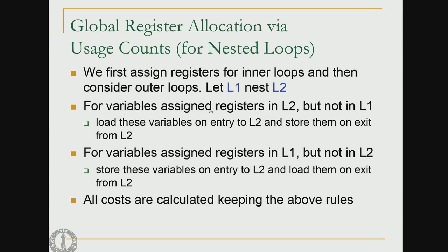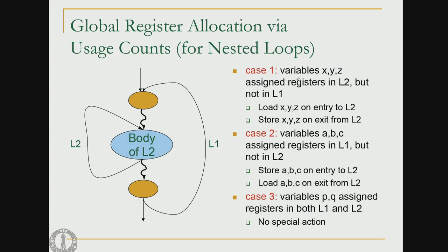For variables assigned registers in L2 but not in L1: load these variables on entry to L2 and store them on exit from L2. For example, if variables x, y, and z are assigned registers in L2 but not in L1, we need to load x, y, and z on entry to L2 and store them on exit. This ensures the allocation works properly.